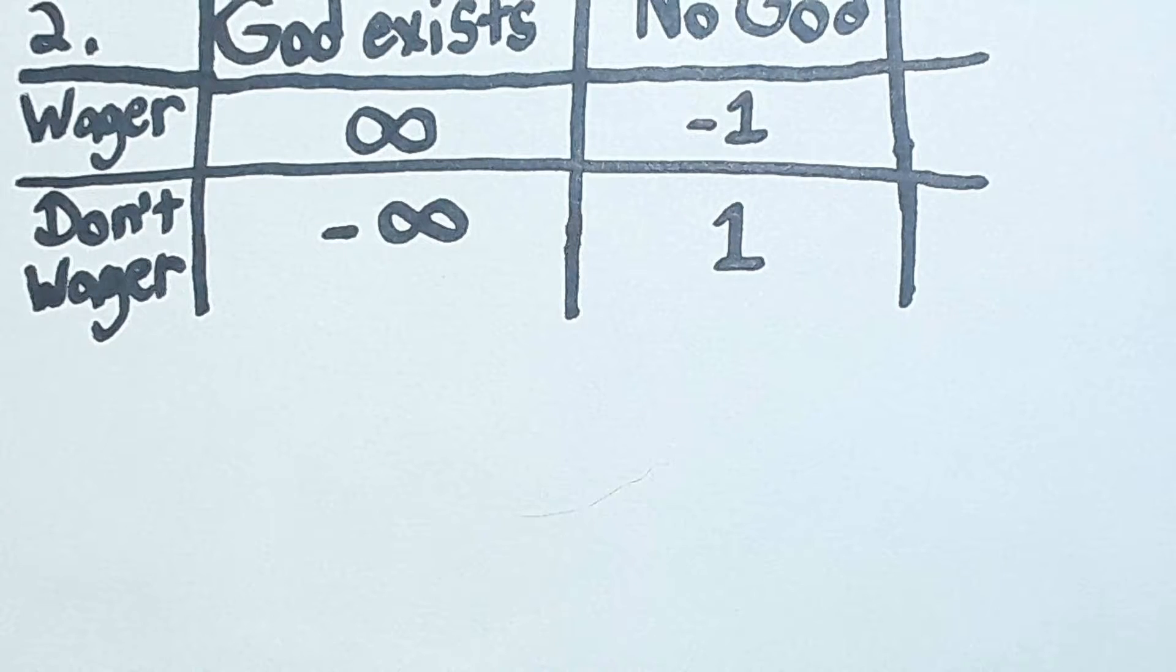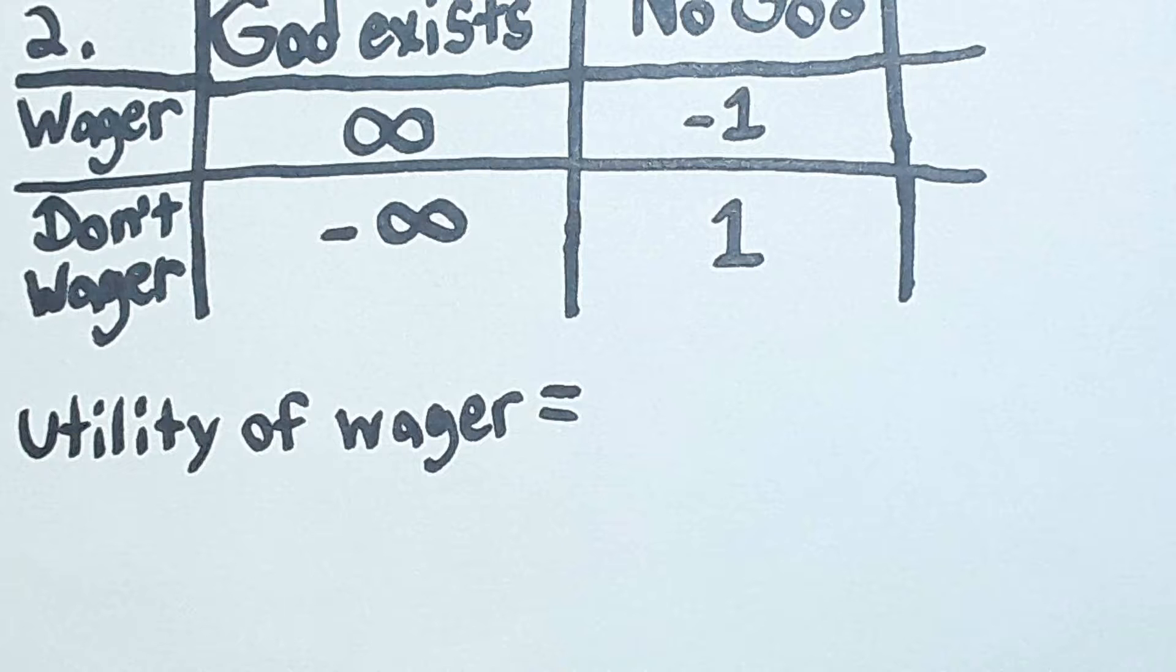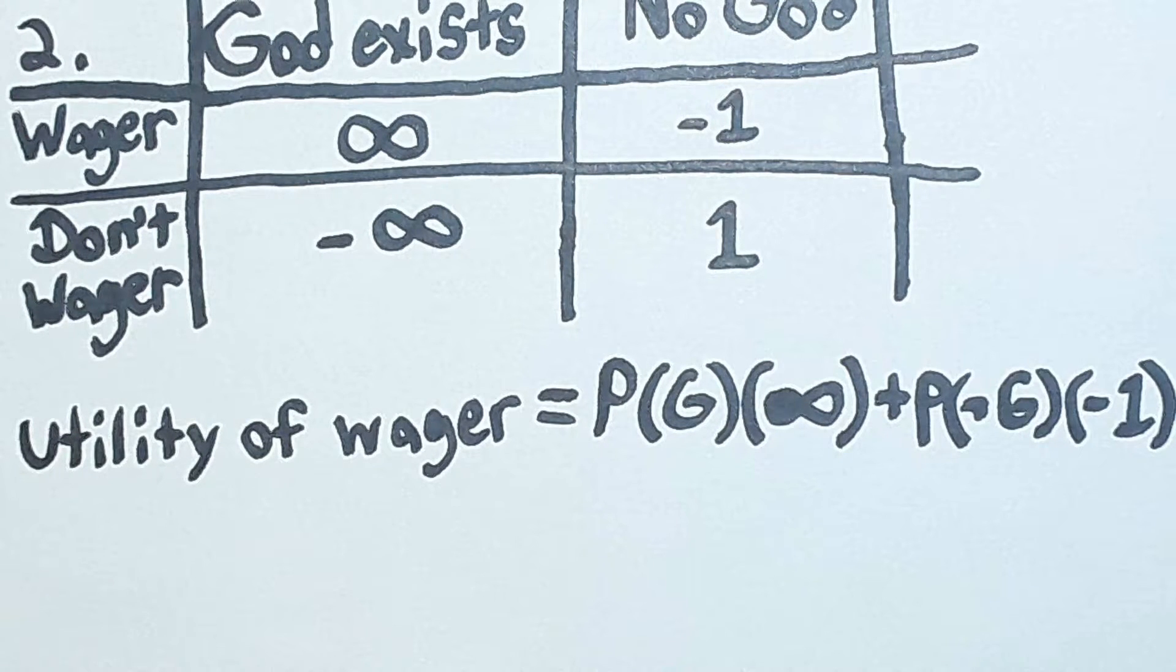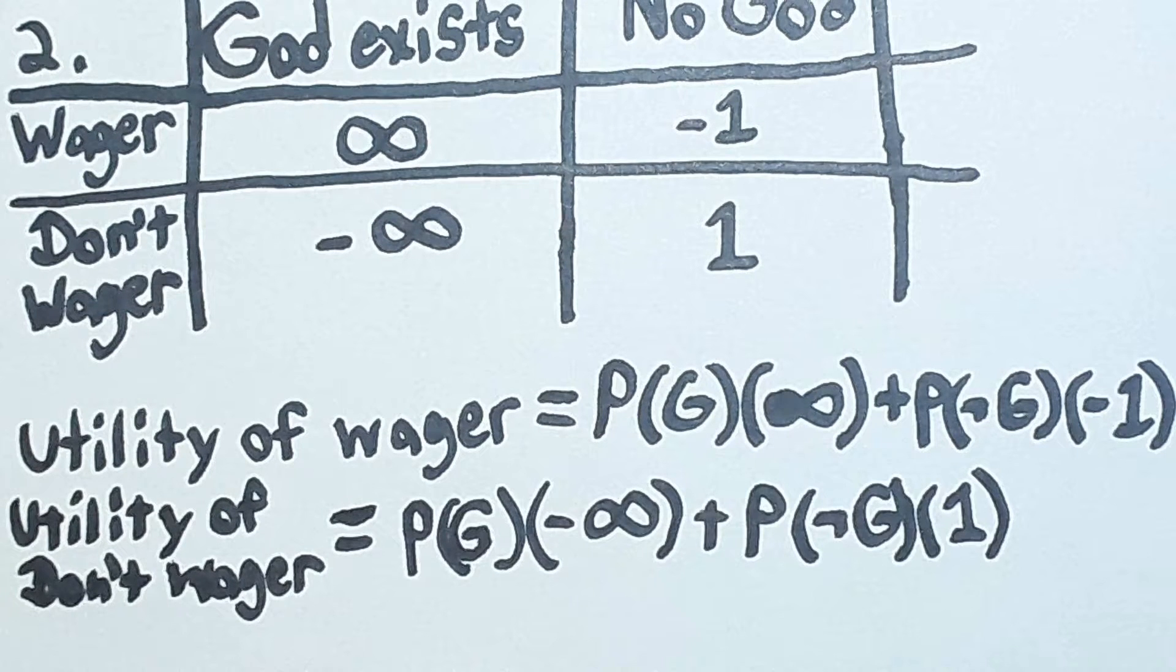Now, calculating the expected utility of wagering on God, we get the probability that God exists times the utility we would receive if God exists, plus the probability that God does not exist times the utility we would receive if he didn't exist. We can use similar logic to calculate the expected utility of not wagering on God.